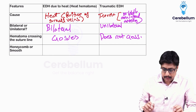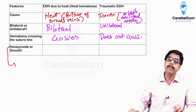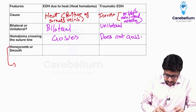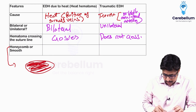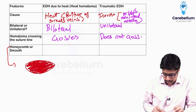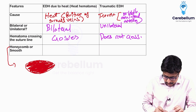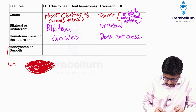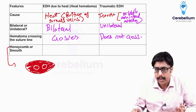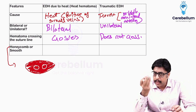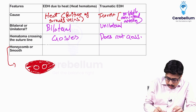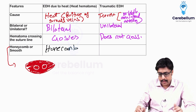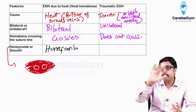Honeycomb appearance — honeycomb basically means, as discussed in thanatology, when in any parenchyma there is presence of gas-filled spaces, that is called honeycomb appearance. So in heat hematoma, because of the presence of heat, there are air bubbles, and that is the reason it gives a honeycomb appearance. Whereas in traumatic EDH, it is not honeycomb — it is all blood only.